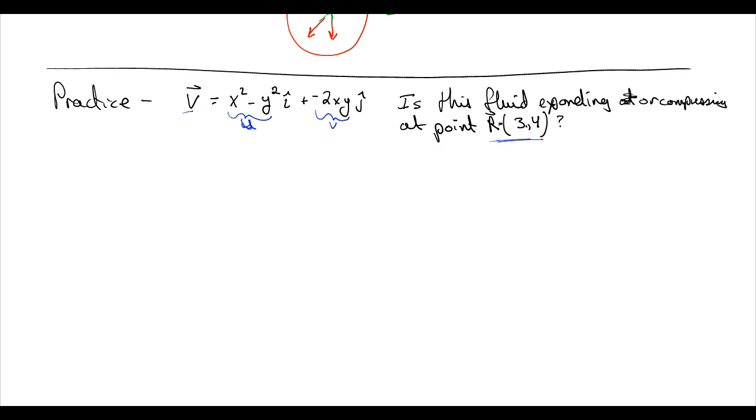So, we know that 1 over dV, dV/dt, sorry, dV/dt, yeah, dV/dt is equal to, and now from the Eulerian point of view, it's du/dx plus dv/dy plus dw/dz. And this, remember, is equal to the gradient of our velocity. Velocity, not volume, it's the gradient of our velocity.